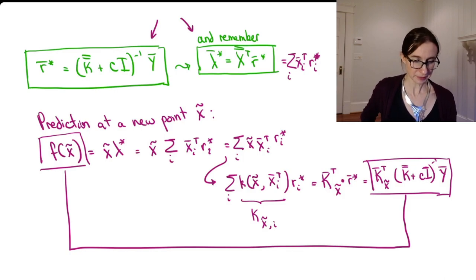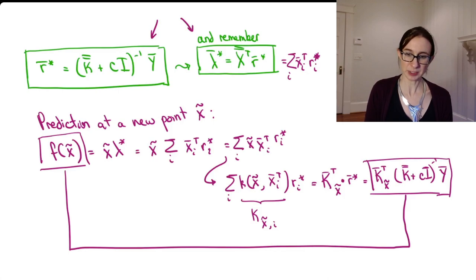Okay, so the last piece of this is to figure out why r star and lambda star look different than the ones we derived for ridge regression. And for that, I've placed a proof in the notes.